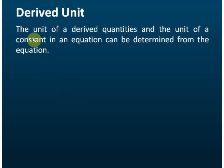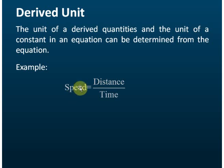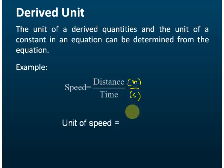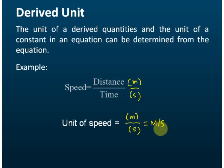The units of derived quantities and the units of a constant in an equation can be determined from the equations. For example, we have learned that speed equals distance over time. The unit of distance is meter, and the SI unit of time is seconds. Therefore, the unit of speed is equal to meter per second, which can also be written as m·s to the power of negative one.